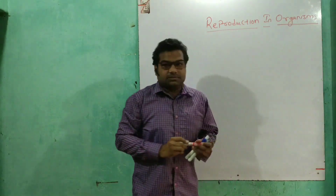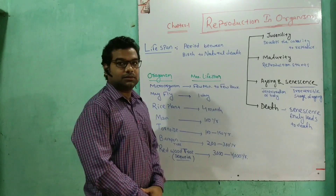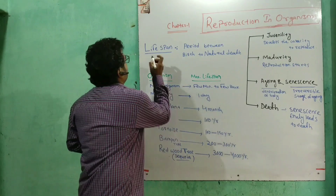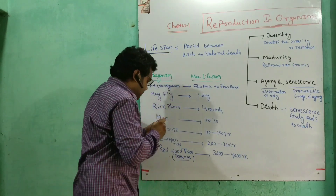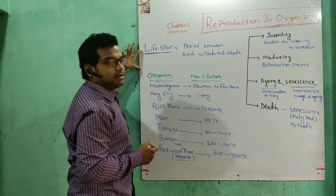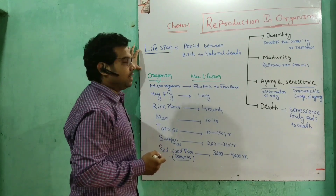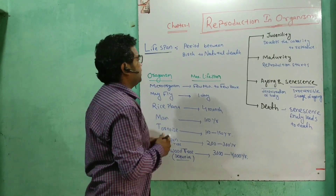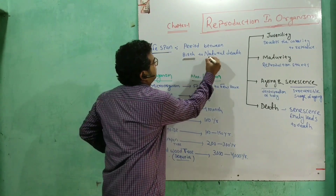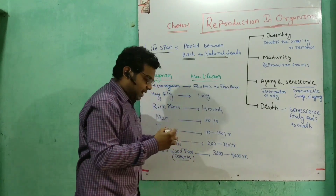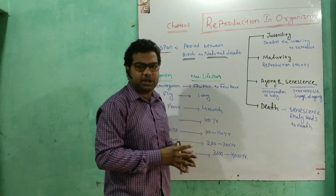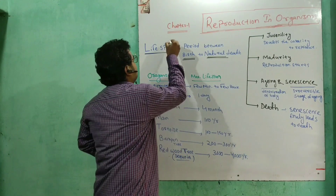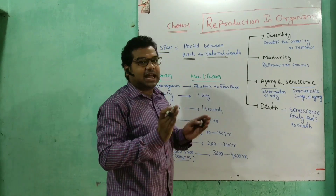Before going to this chapter, first of all we discuss about what is lifespan. Lifespan is the period between birth to natural death. So lifespan is the time between birth to natural death.